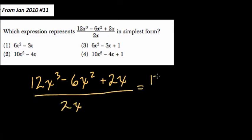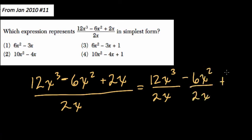Now really, you can think of this as 12x to the third over 2x minus 6x squared over 2x, and plus 2x over 2x.